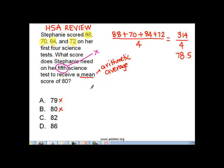All these four test scores, 88 plus 70 plus 84 plus 72, plus the fifth score which is x, divided by 5, equals the desired average, which is 80. So we want this to be 80.